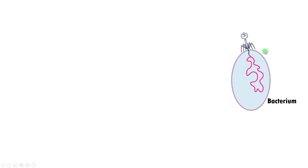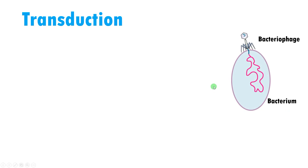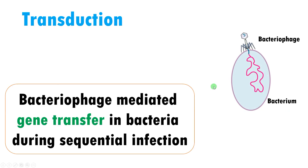This is a bacterium and this is a bacteriophage. Bacteriophages are viruses that infect bacteria. Even though bacteriophages are enemies, they help in the evolution of bacteria by transferring genes from one bacterium to another. This process is called transduction, or transduction is a bacteriophage-mediated gene transfer in bacteria during sequential infection.